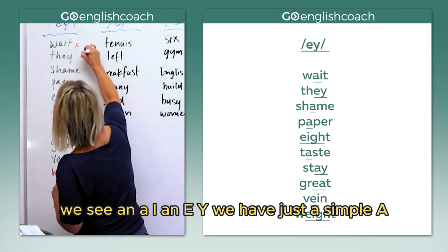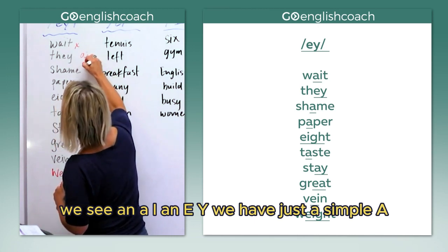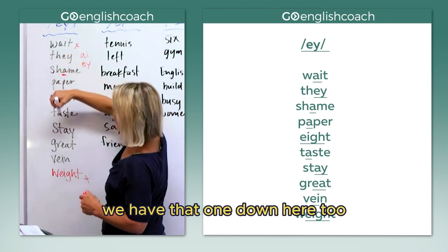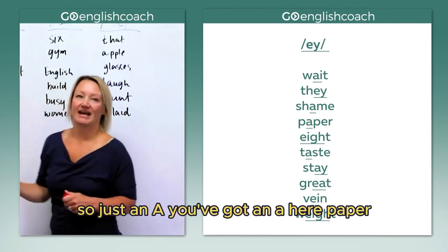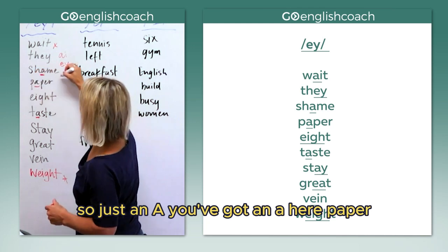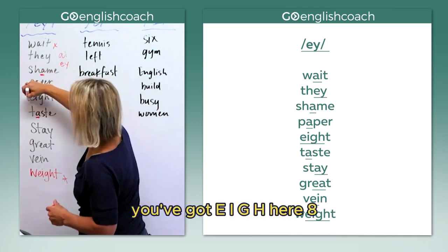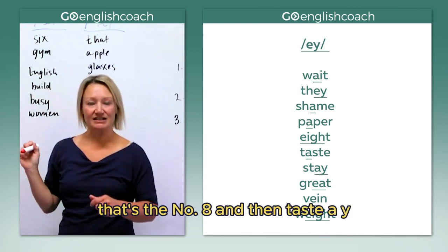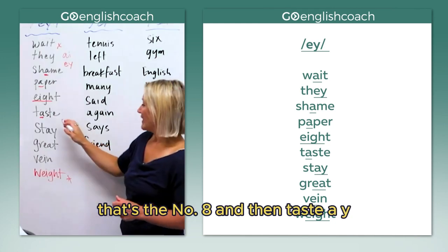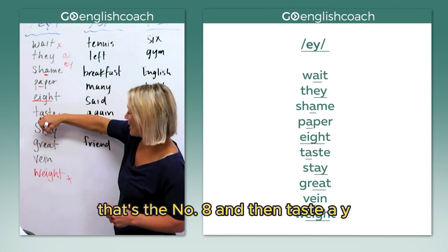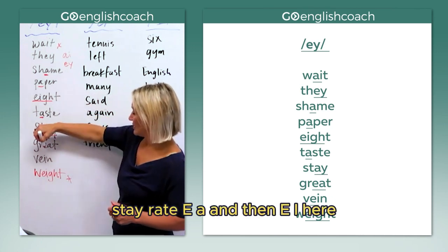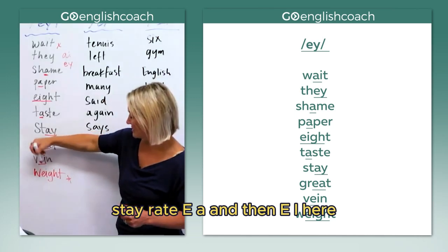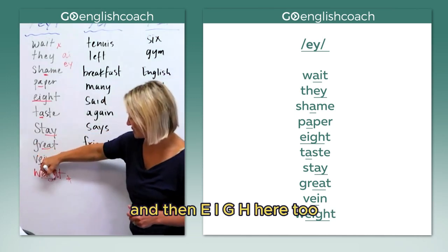What do you see here? We see A-I, an E-Y. We have just the simple A — and you can see that one in 'paper' too. You've got E-I-G-H, as in 'eight.' Then A-Y in 'taste' and 'stay.' Then E-A in 'great,' and E-I and E-I-G-H in 'vain' and 'weight.'